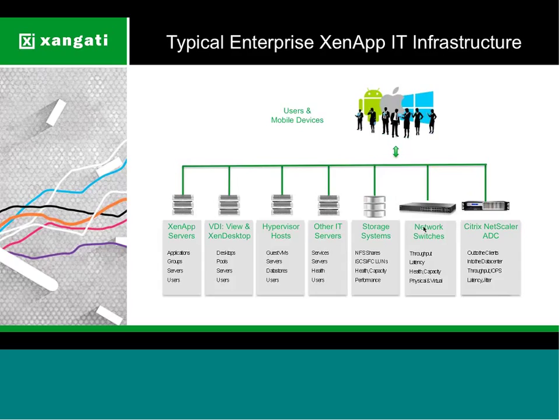This is the typical ZenApp IT infrastructure our customers are running. The most important element is the human element — the users. All the data center reports can be shredded if users are complaining. Ultimately, the test of a healthy ZenApp infrastructure is the experience end users are having. Looking into the data center, you have ZenApp servers — a collection of servers working together to provide ZenApp services, giving us information about applications, groups, users, and servers.